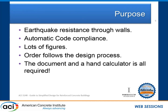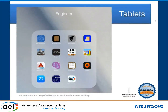One of the things this manual has is that the order of the book follows the design process. One of the changes in 318 was inspired by this book — having a single chapter for a column so you don't have to go to five chapters to design one, or six chapters to design a beam. This document is developed such that you could actually design the building using a hand calculator, or spreadsheets, because it's simple enough.